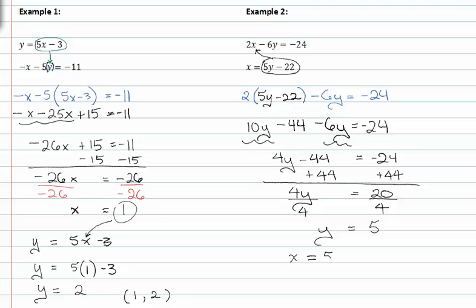X is equal to five times y. We know y to now be five, so we can find x. X is equal to twenty-five minus twenty-two or x is equal to three.